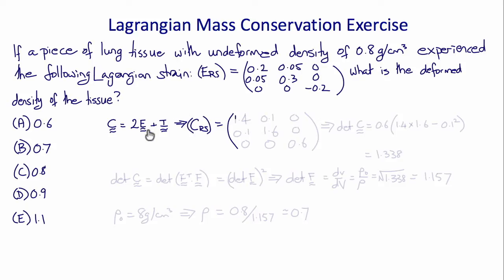Using C equals 2E plus I, we get that the components of C are 1.4, 0.1, 0, 0.1, 1.6, 0, 0, 0, 0.6.